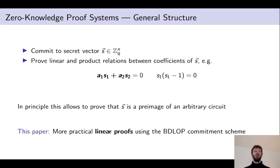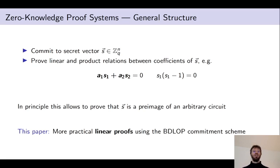Our paper is about a lattice-based zero-knowledge proof system, so let me quickly revisit the structure of general proof systems. Usually there are two tasks that one needs to solve. First, there needs to be a commitment scheme that allows committing to some secret vector S.